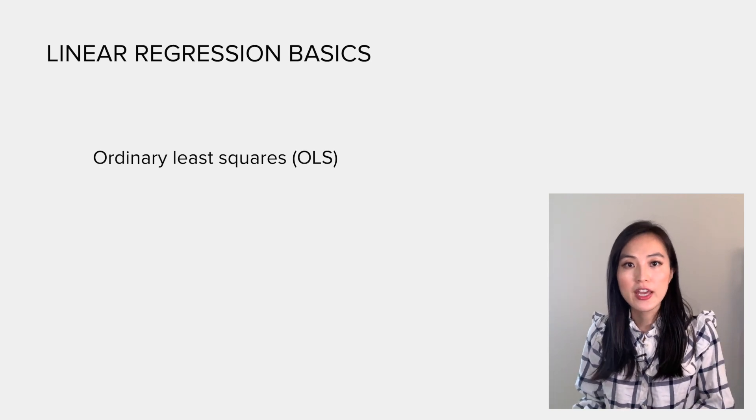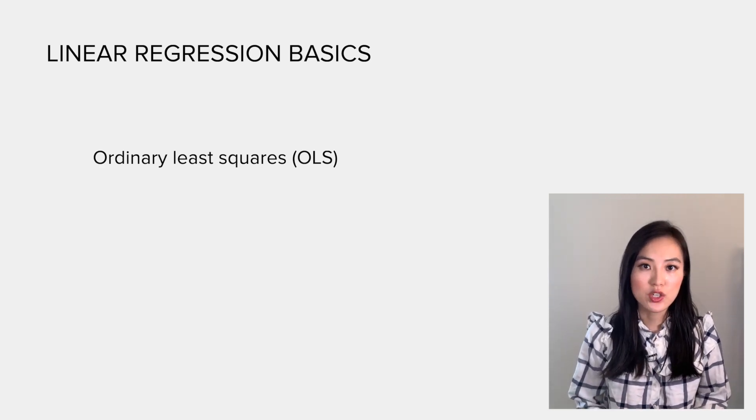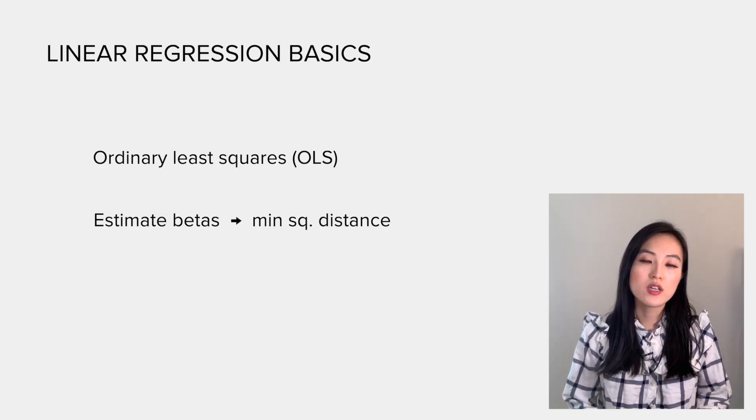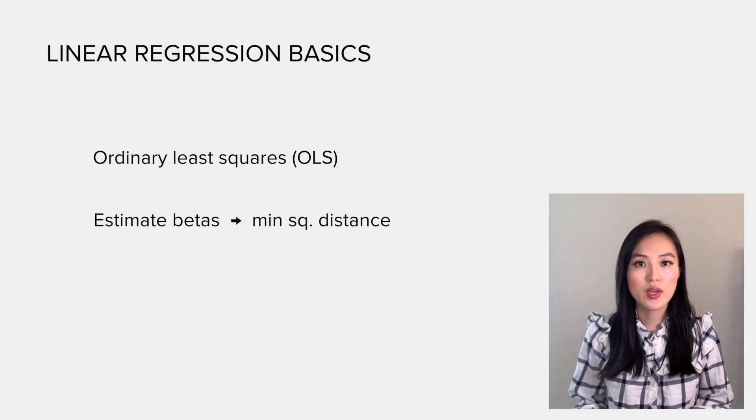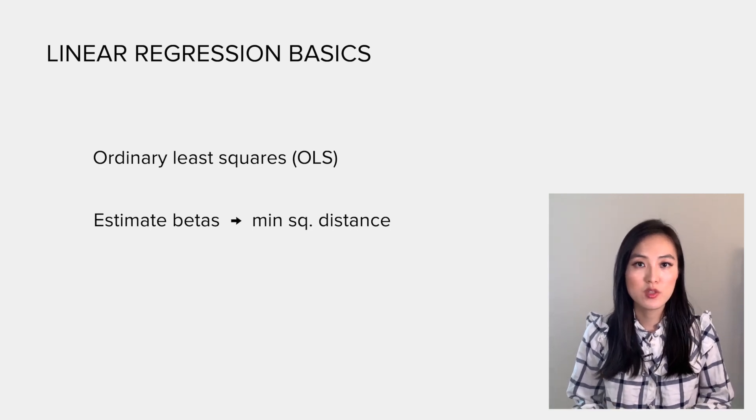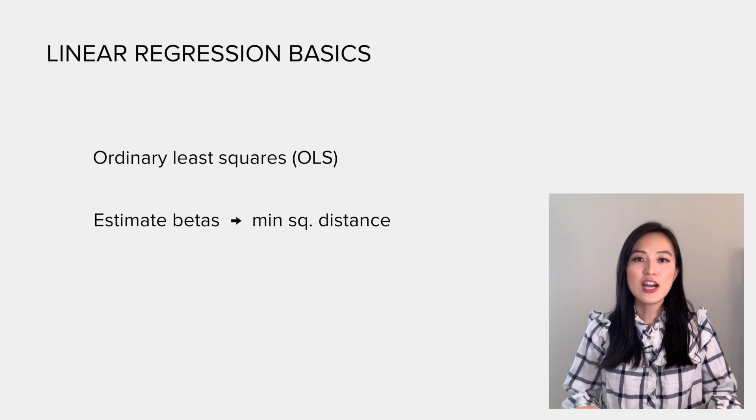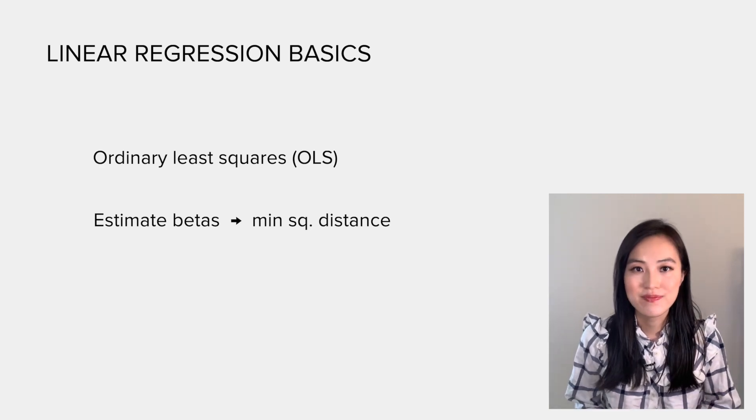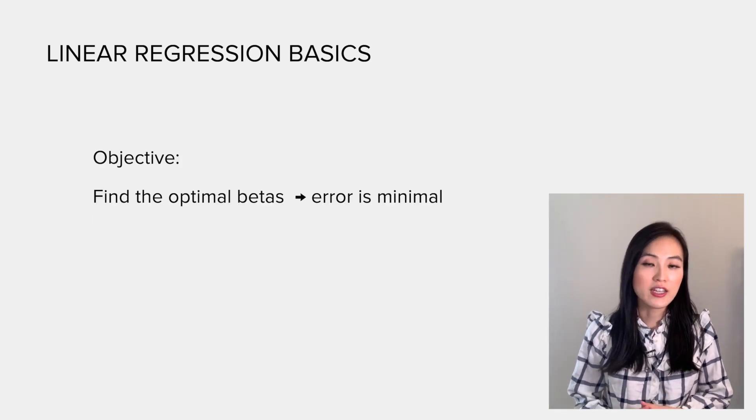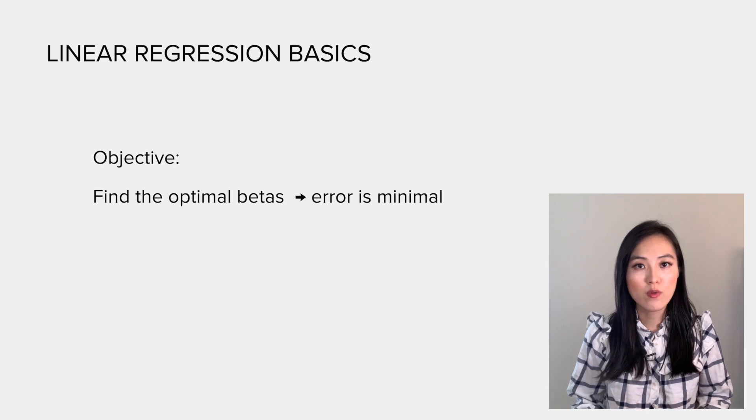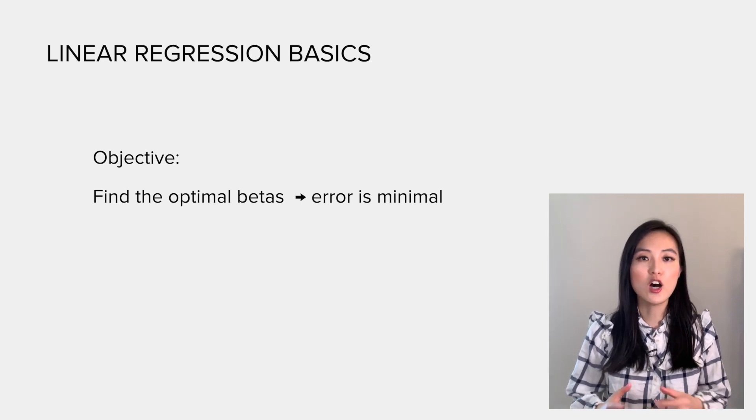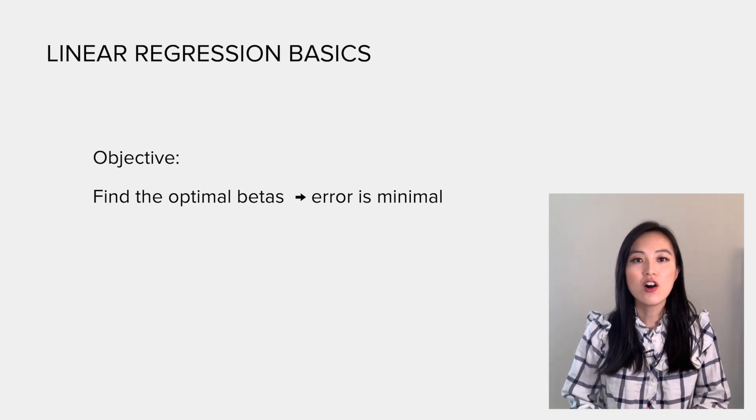Put it more formally, ordinary least squares is a method used in linear regression which approximates the parameters to get a minimum square distance between observed and predicted values. I hope so far everything makes sense. The objective is to find the optimal betas so that the error is minimal. But how do we do that?